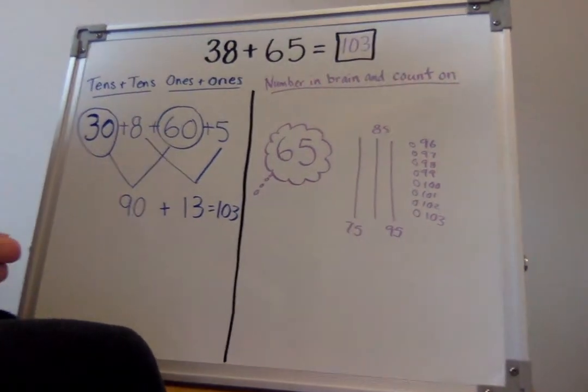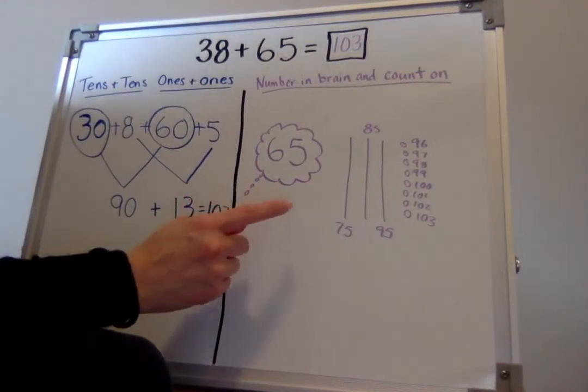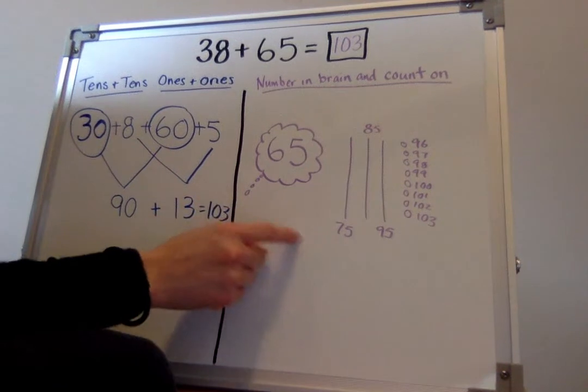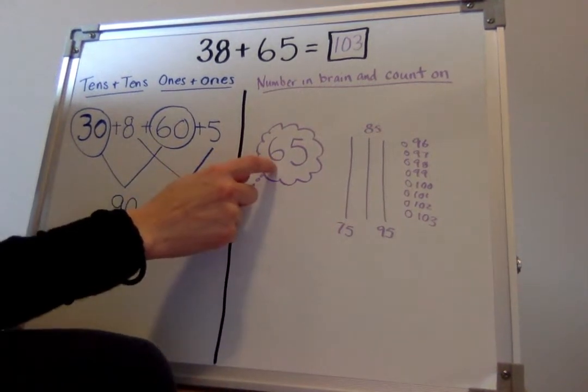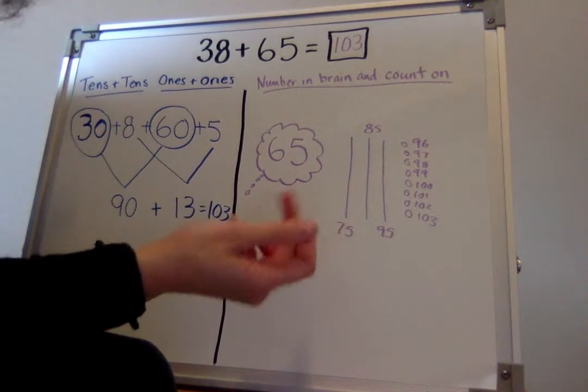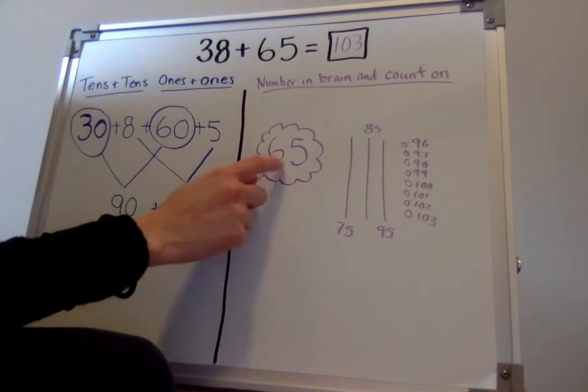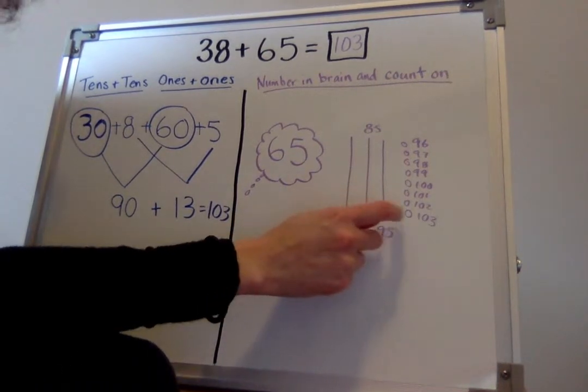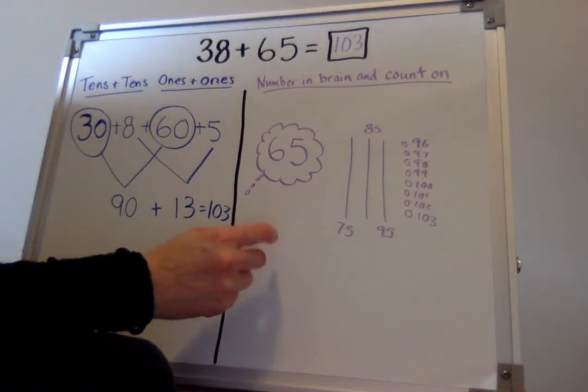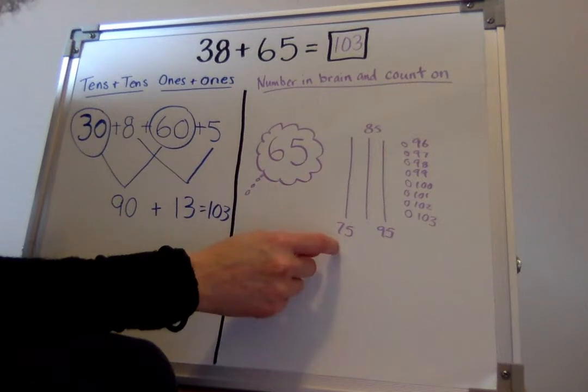Okay, and then the other strategy, probably my favorite, is when I got to keep a number in my brain and count on. I kept the number 65 in my brain because 65 is bigger and it will take me a shorter amount of time to draw out 38. So then I kept 65 in my head and I drew 38 in tens and ones. Then I counted, and then I decade counted up.